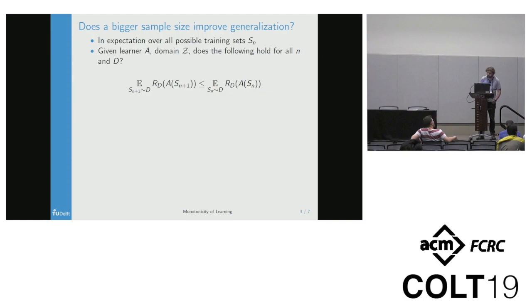We call this property monotonicity of a learner, and you can also visualize this property. Here on the y-axis, we have the expected risk, and on the x-axis, we have the sample size. If this property holds, the risk will monotonically decrease. If you think about generalization bounds, they are usually monotonically decreasing. But just that the bound monotonically decreases does not mean that the risk will really, in practice, monotonically decrease.